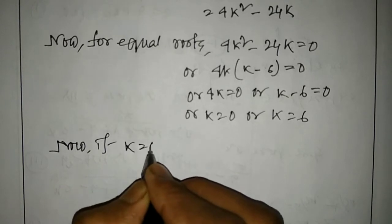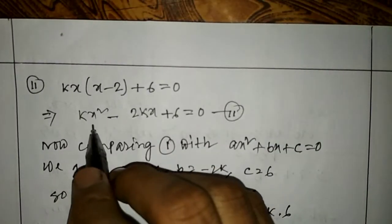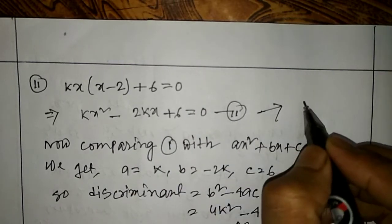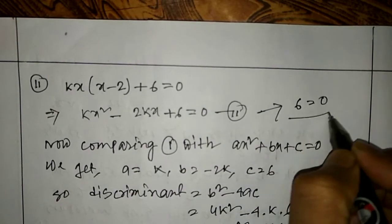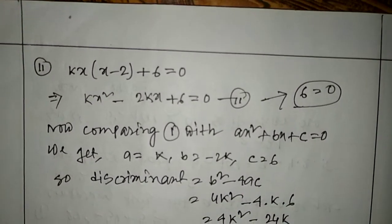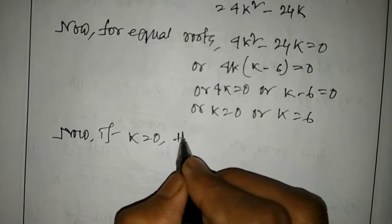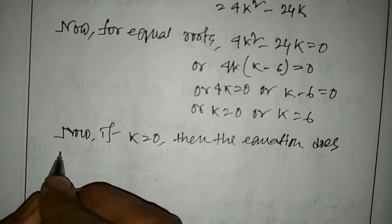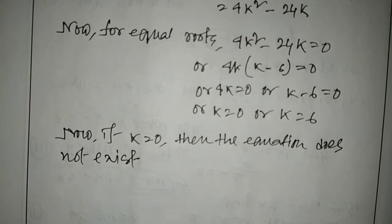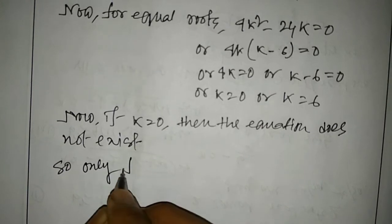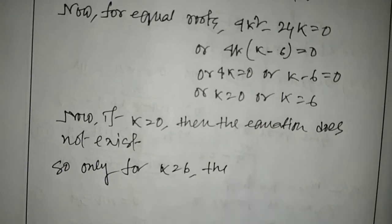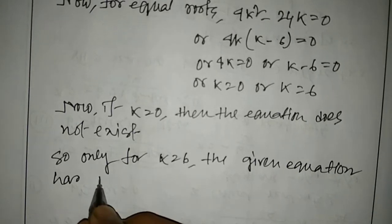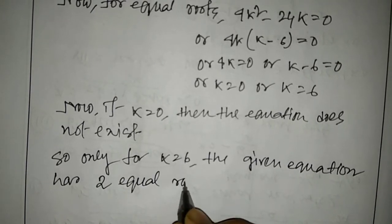Now if k equals 0, putting this value into the equation makes both the kx squared and minus 2kx terms become 0, leaving 6 equals 0, which is not possible. So k equals 0 is rejected, and only for k equals 6 does the given equation have two equal roots.